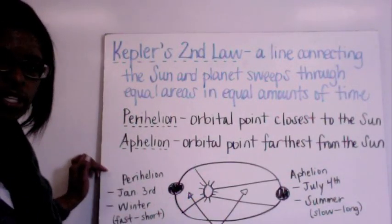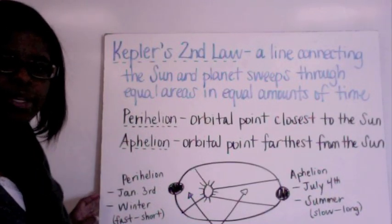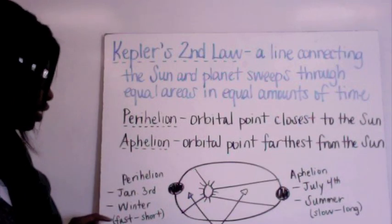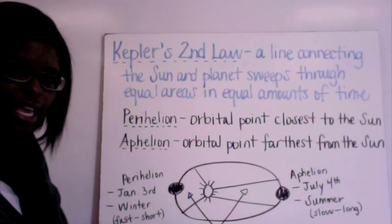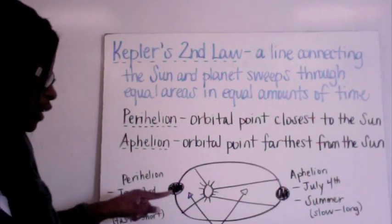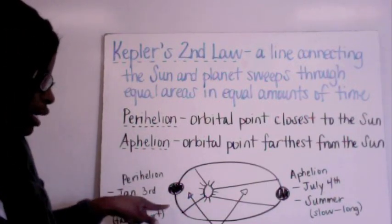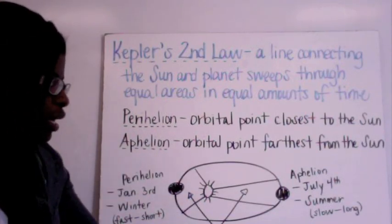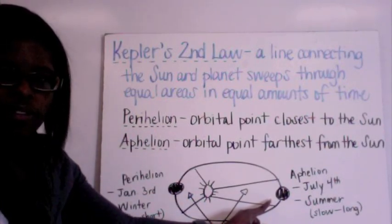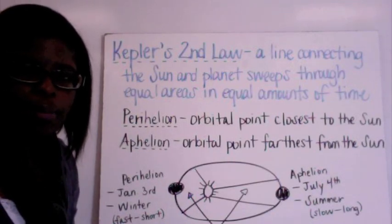This is going to be in perihelion. Perihelion happens on January 3rd approximately of each year. This is going to be during winter of course. And winter as a result is going to happen fast and we're going to have a short winter in the northern hemisphere. So the gravity of the Sun is going to pull this planet through this shaded area here in an equivalent amount of time as it would if the planet was over here in aphelion which is going to happen approximately July 4th.